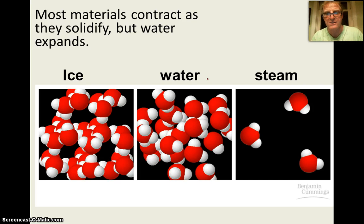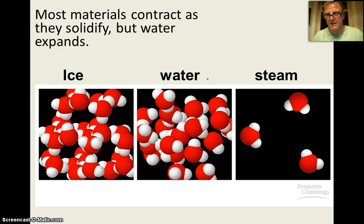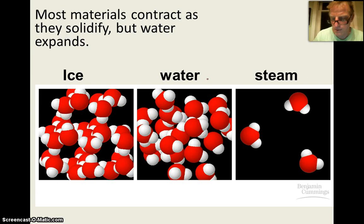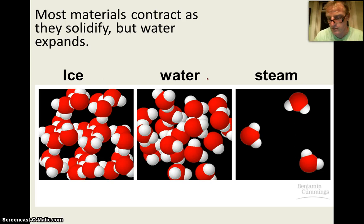In ice, water is less dense; in liquid form, more dense; and as steam, it has the lowest density of the three states. But this is just a brief introduction to some of the properties of water and why water is so important for living things.